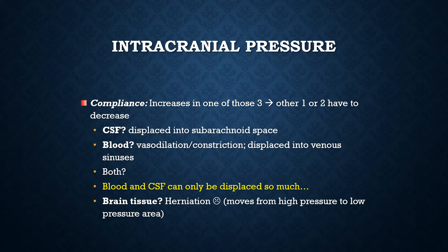However, some herniations are fatal. For example, if the brain herniates downward through the foramen magnum — that's the hole at the base of the skull where the spinal cord connects to the brain — if the brain were to shift down through this hole, this could cut off blood supply to the brain and it could be fatal to that patient.